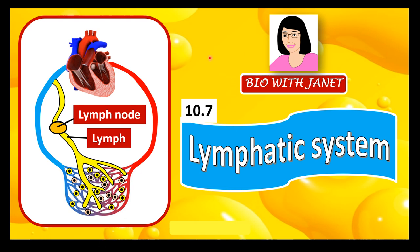Greetings to everyone. Welcome back once again to my educational channel on biology. I'm Teacher Janet. Today we'll be studying the lymphatic system, subtopic 10.7 in our Form 4 biology syllabus. The lymphatic system is a circulatory system that's separate from the blood circulatory system, but it is connected to the blood circulatory system. Let's find out more about this mysterious system that is silent and doesn't have a pump at all.